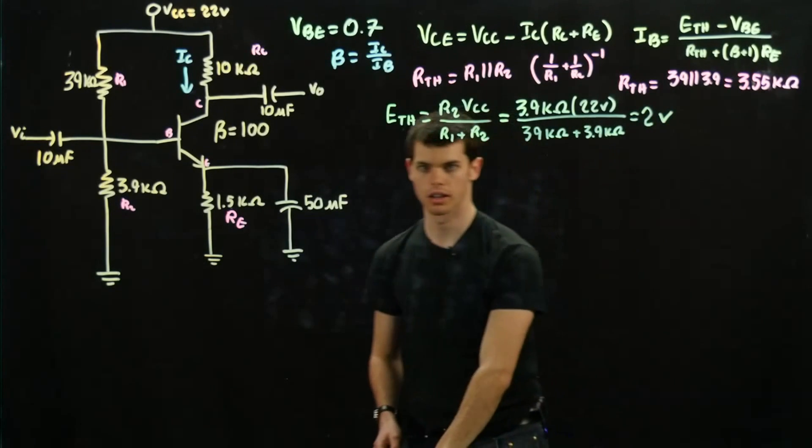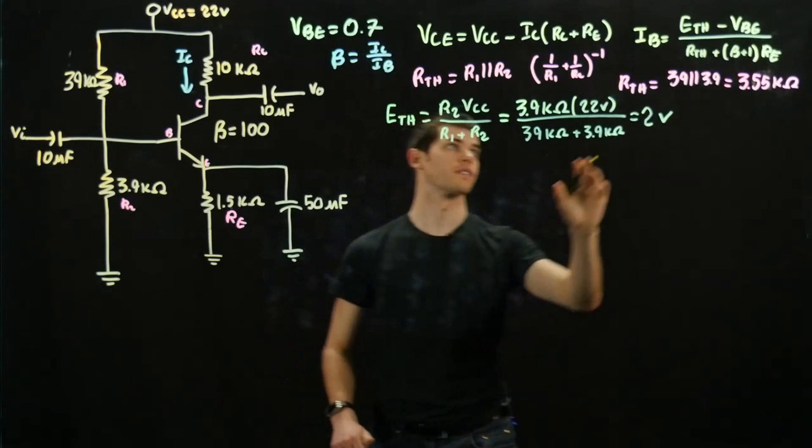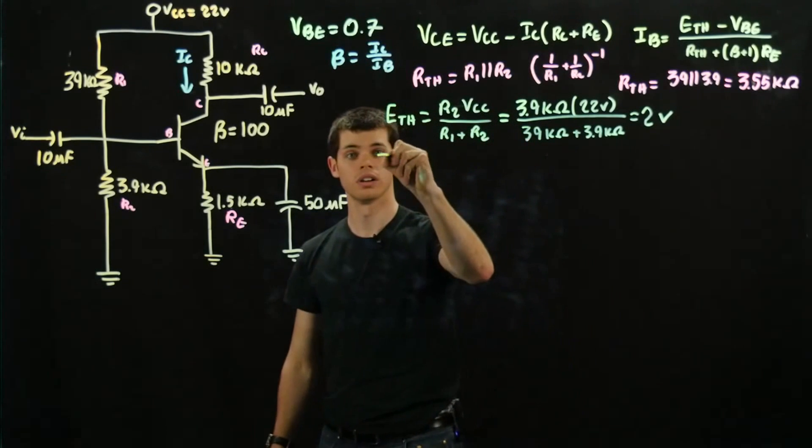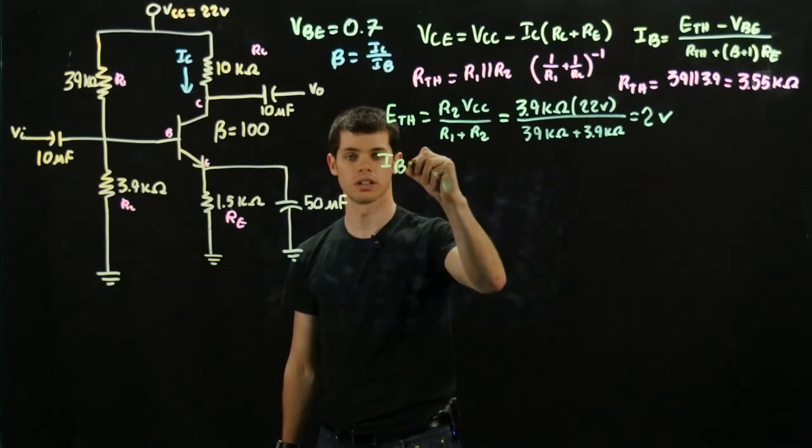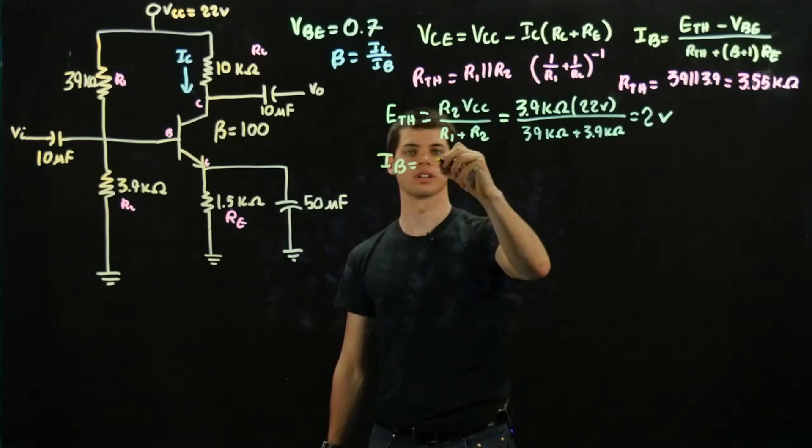Okay. Now we're going to move on to solving for IB. Since we have the two known values, E-thevenin and R-thevenin which we previously did not know, IB is going to be equal to E-thevenin, which is 2 volts,